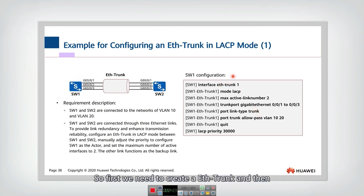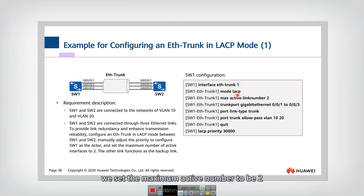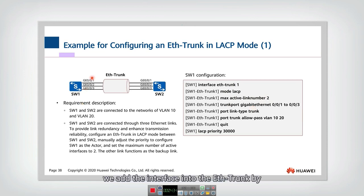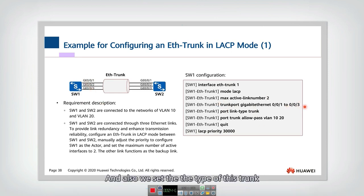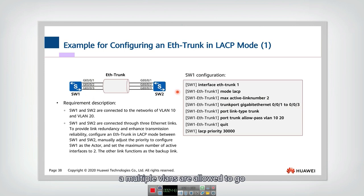To achieve this, for switch one we first create a trunk and set the mode to LACP. We set the maximum active number to two, and then add all three interfaces into the trunk using this command. We also set the type of this trunk — because multiple VLANs are allowed, we set the trunk type as trunk.